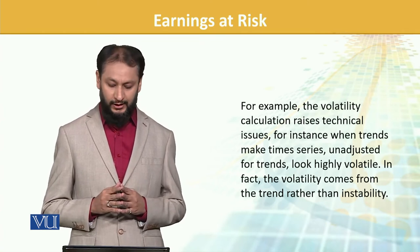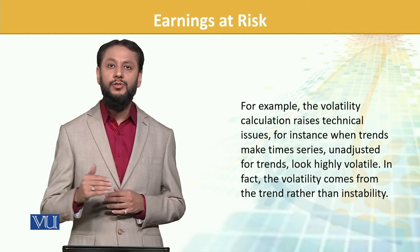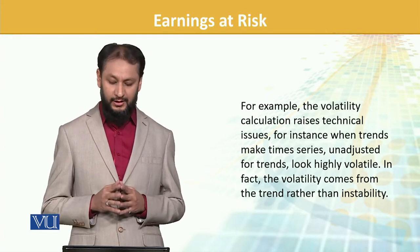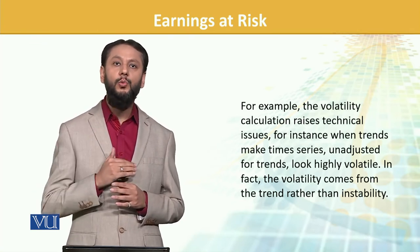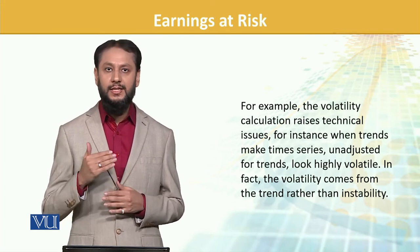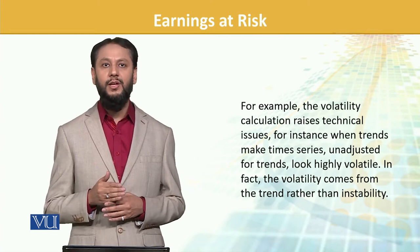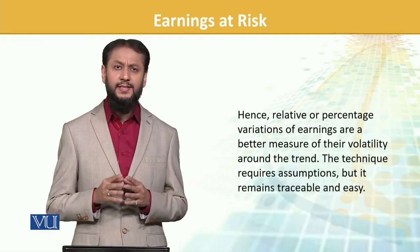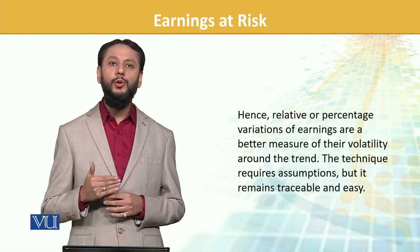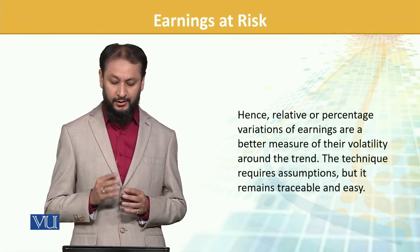For example, the volatility calculation raises technical issues. When a trend makes a time series unadjusted for the trend look highly volatile, uptrends jo hum dekh rahe hain time series mein - woh unadjusted dikhenge to movement show kar raha hai. In fact, volatility comes from the trend rather than instability - yeh trend upar ja raha hai, thoda upar niche ho raha hai lekin woh trend ki wajah se movement aa rahi hai, koi zyada risk ya volatility us mein nahi hai, but still it will be counted as volatility risk. Hence, relative or percentage variation of earnings are better measures of their volatility than amounts, but still both are used.